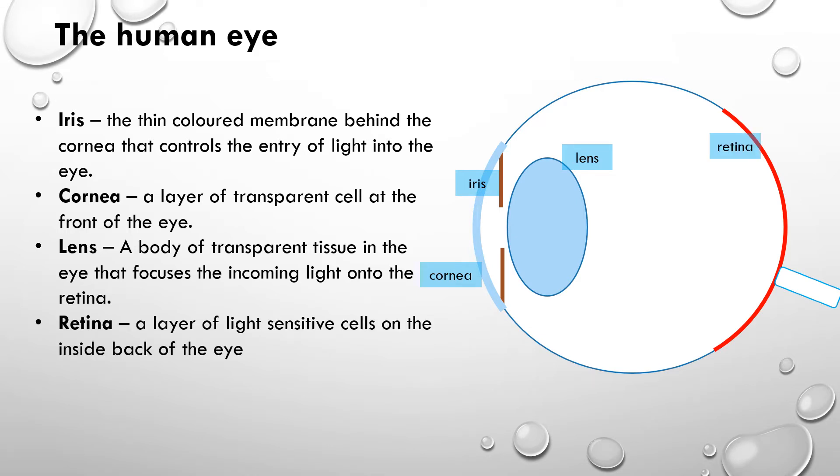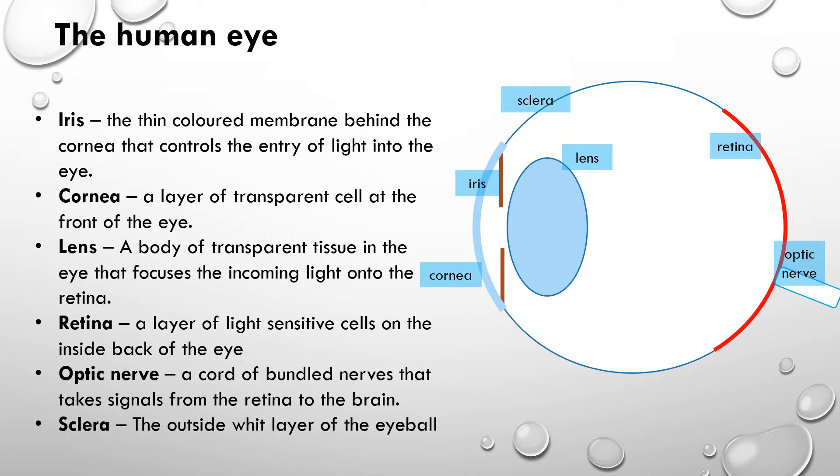The retina on the back of the eye contains a whole lot of different cells that can detect when light hits them, and if light does hit them, it sends a message to our brain through the optic nerve. The optic nerve sends messages to our brain, and then our brain can determine what the image is that we see. The white part of the eye that we see around the iris is called the sclera.